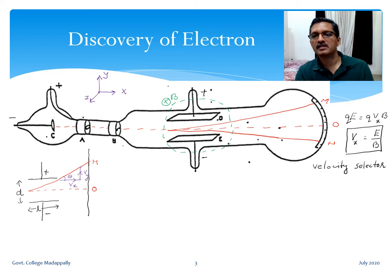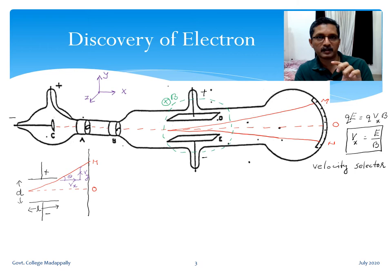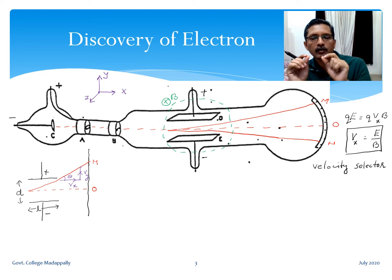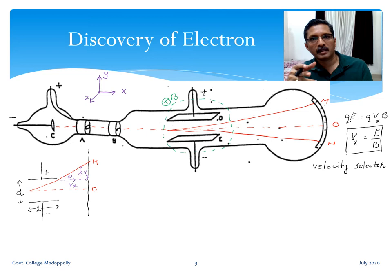Thomson was the first person to employ this velocity selector technique. When you apply crossed electric and magnetic fields and tune them to get an undeflected beam, the x-component of velocity is always E divided by B. In effect, you are selecting from the beam those particles having a particular velocity or a narrow band of velocities around a particular value. After Thomson's successful measurement of the charge-to-mass ratio of the electron, the velocity selector technique has been used widely in mass spectrographs of different charged particles.